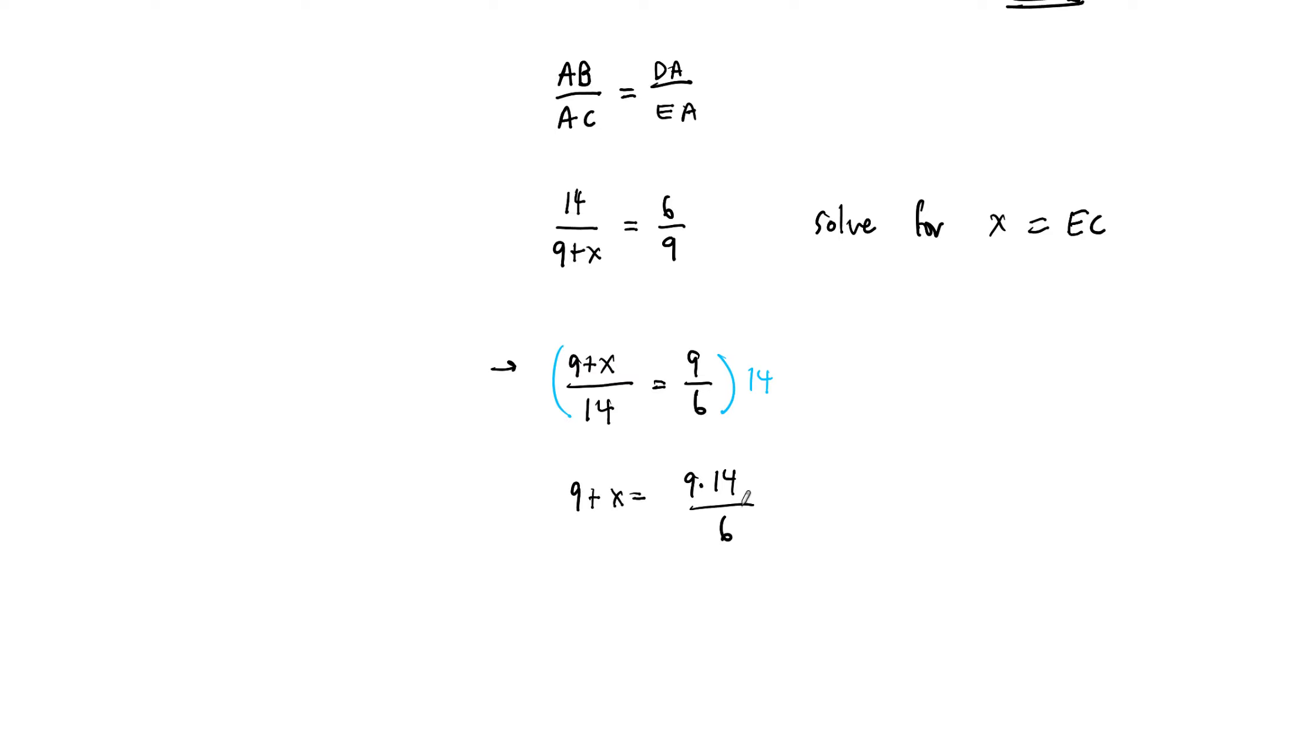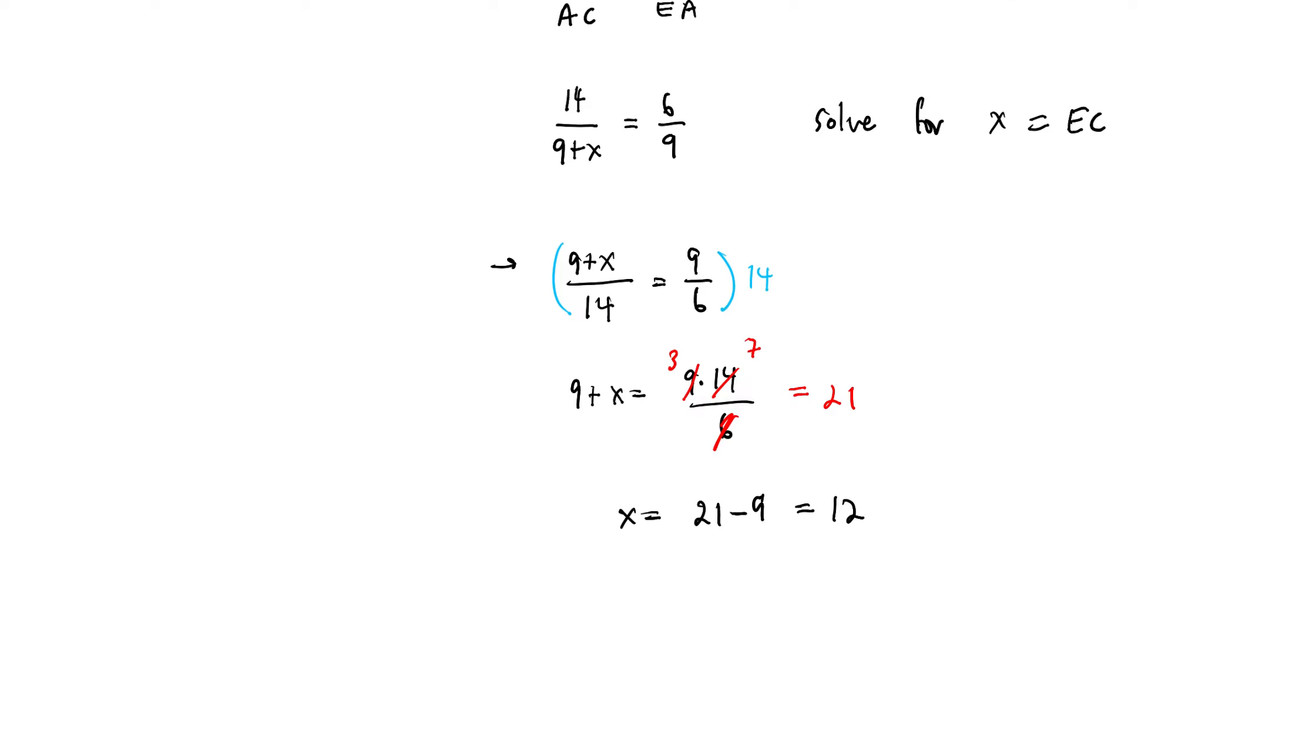We can do some more cancellation here just to make this easier to reduce. So this can reduce to 3, this can reduce to 7. We took a 3 and a 2 out, so those cancel from the 6. So this side is just equal to 21. And then we get that X must equal 21 minus 9, so X is equal to 12.